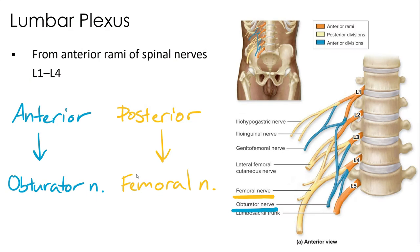The lumbar plexus originates from the anterior rami of spinal nerves T12 through L5. As the rami travel away from the vertebral column, they initially split into anterior and posterior divisions, represented here by blue and yellow respectively. These divisions undergo additional splitting and merging to form several terminal branches, including the obturator nerve and the femoral nerve, which are the two you are responsible for from this plexus.